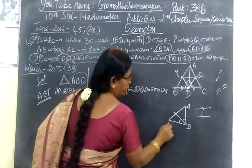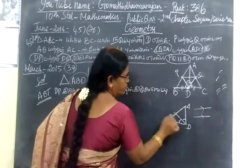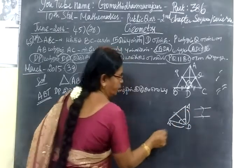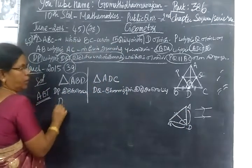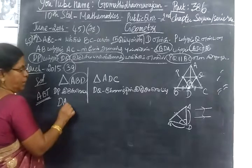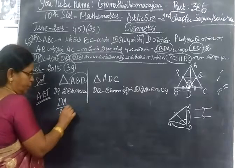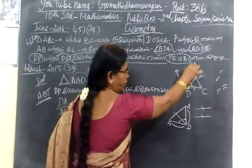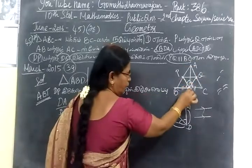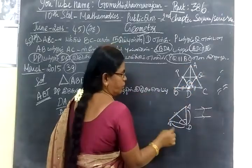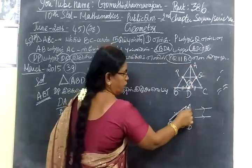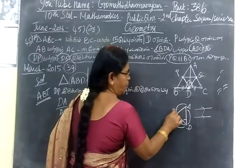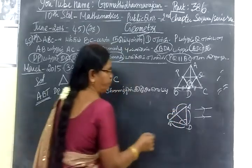DA, this is DB. So DA by DP — you write DA by DB. That is the ratio as you can use it here. DA more, AP by BP.